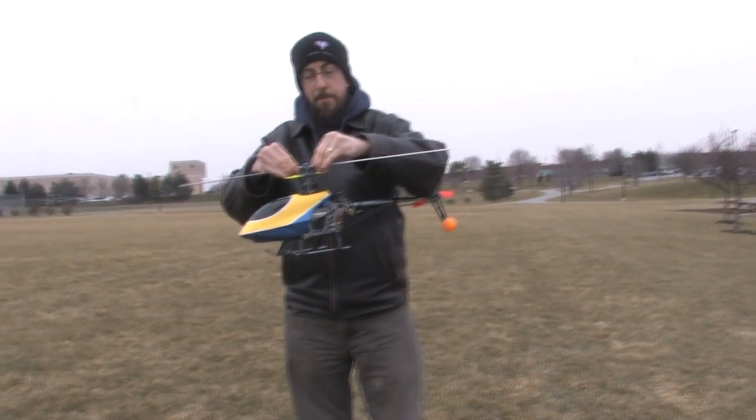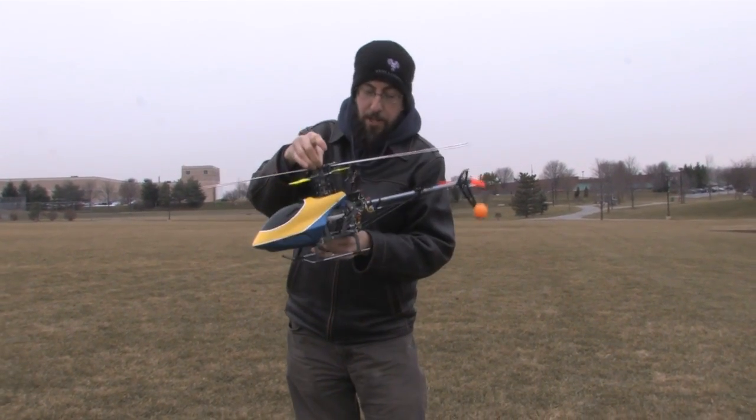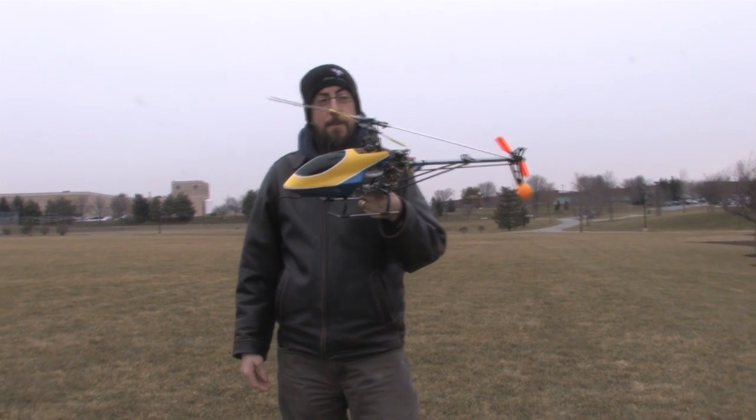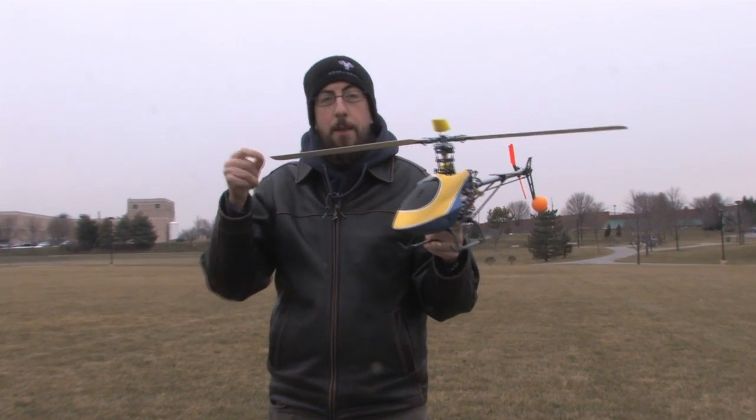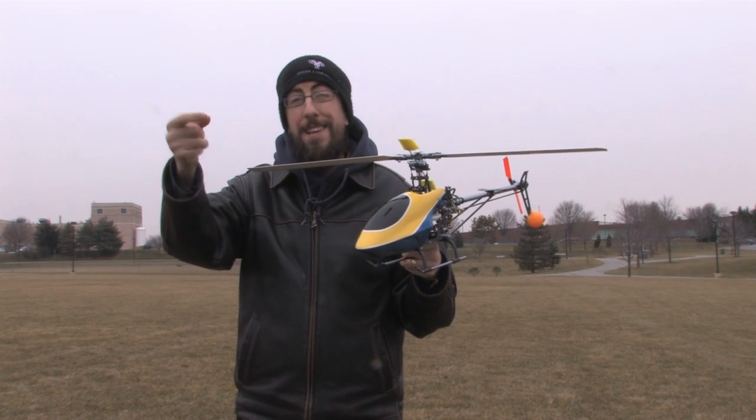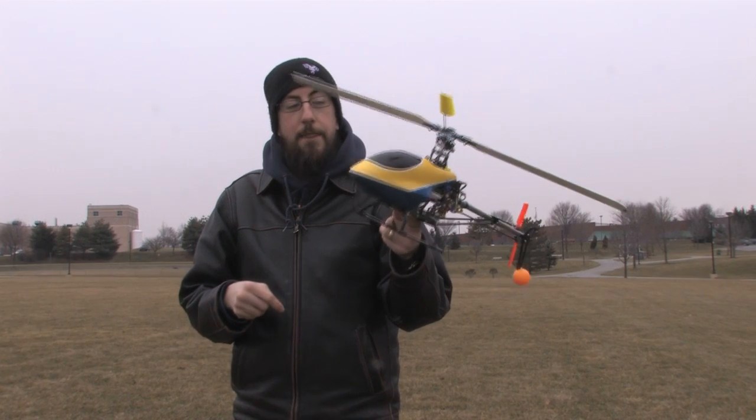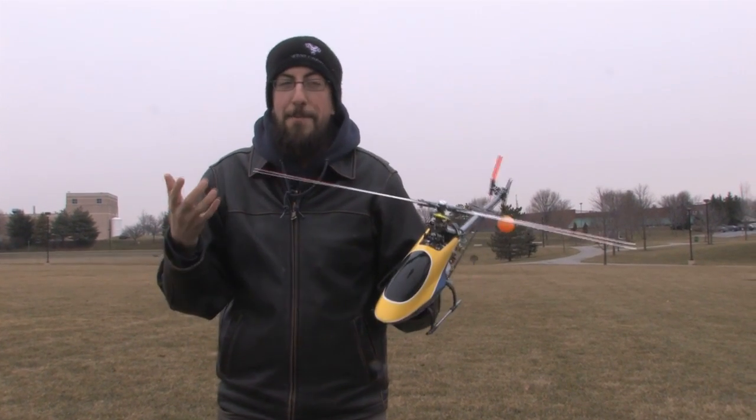There's one thing I forgot to mention about this one before, is that since this one is collective pitch, you can actually have negative pitch on the blades. And the way this is set up is that I have 10 degrees of positive pitch when my collective stick is the whole way up. And I can make 10 degrees of negative pitch when it's all the way down, which means that it can fly upside down. Now I'm not very good at this yet, but it can be done.